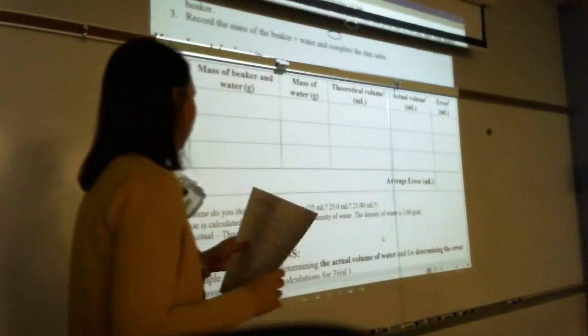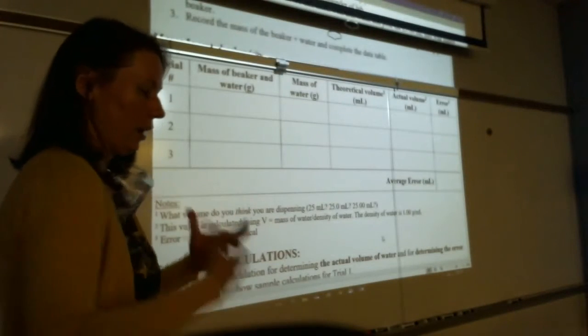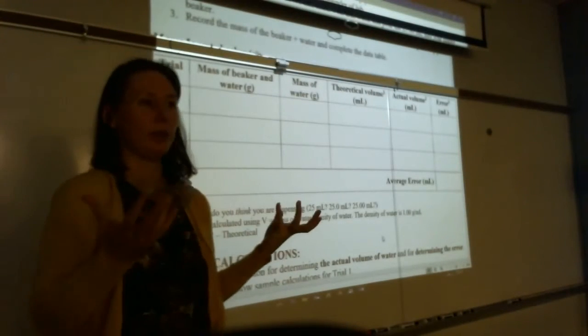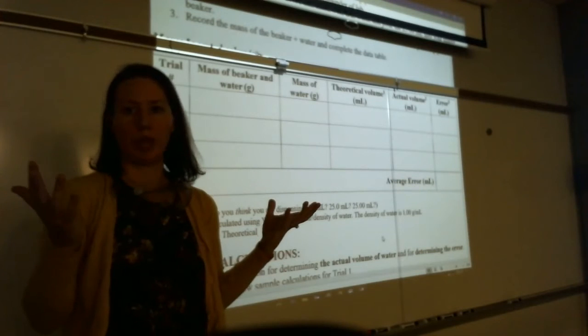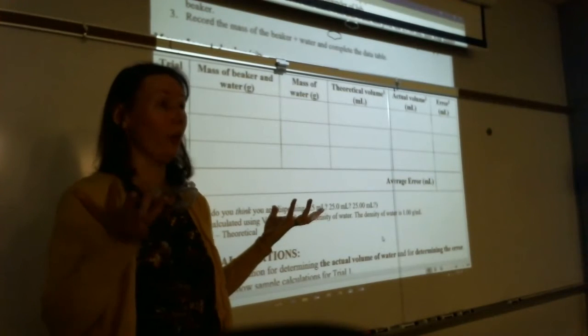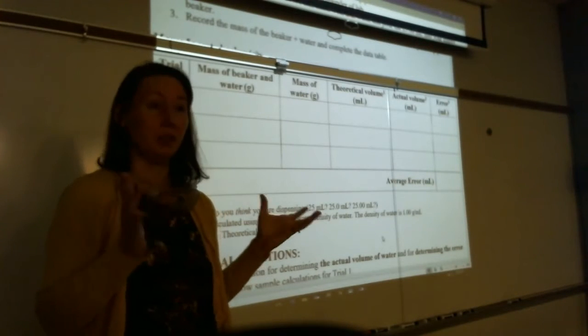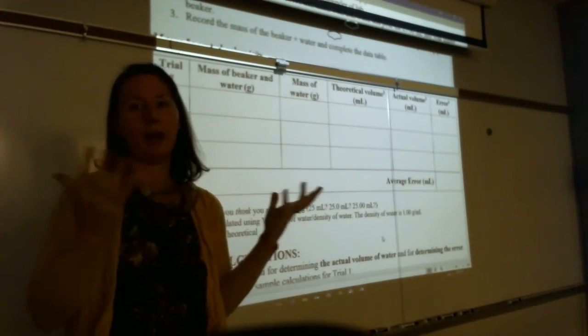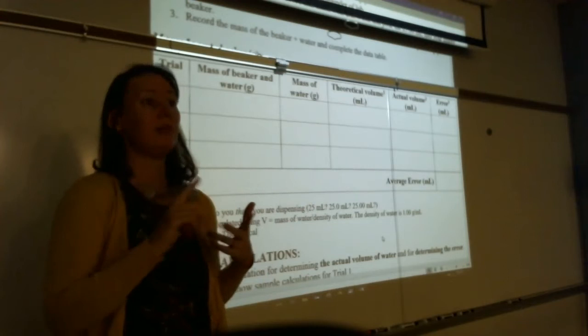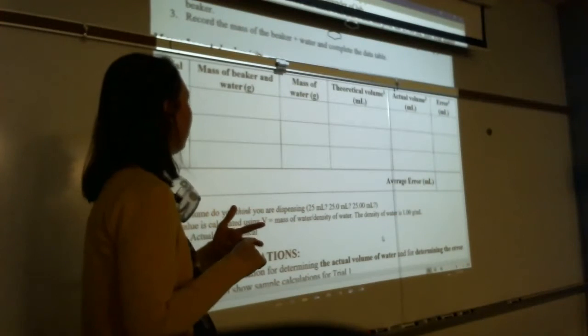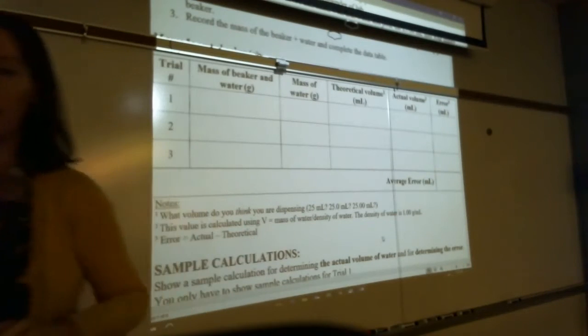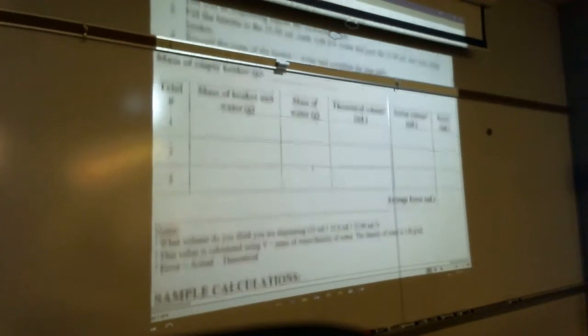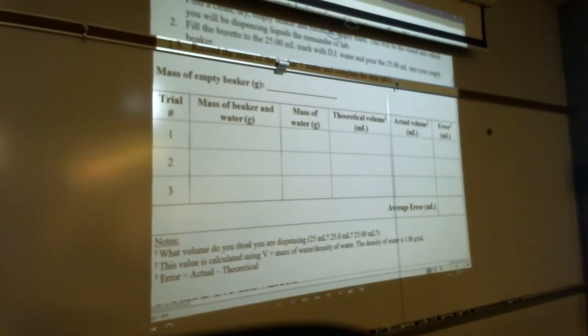So what you're going to be doing is you're going to get yourself a beaker. The volume of the beaker is arbitrary. As long as it's big enough to hold 25 milliliters, you're fine. So don't pick a 10 milliliter beaker, but anything beyond that, 100 milliliters, whatever, doesn't matter. Make sure it's clean, make sure it's dry, and record its empty mass. So I've got a spot for that right there. And you're going to use that same beaker throughout the entire experiment, and that's just to collect your liquid.